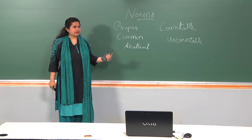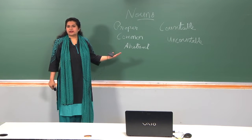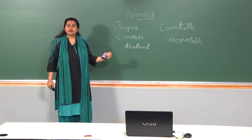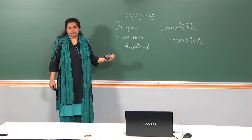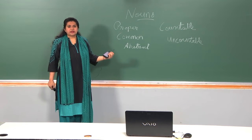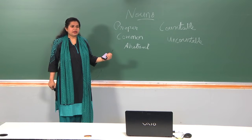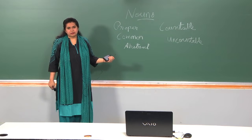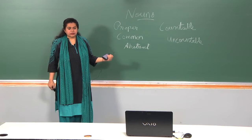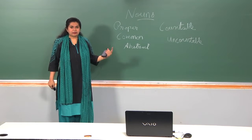Common nouns — we say a black table, a blackboard; we are not talking about a very specific blackboard. For example, I have a pen. But if I say I have a Sheaffer pen or a Parker pen, that makes it very specific — I am using a proper noun, a specific name.